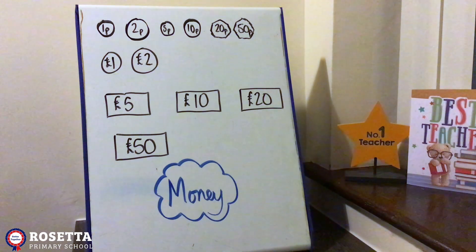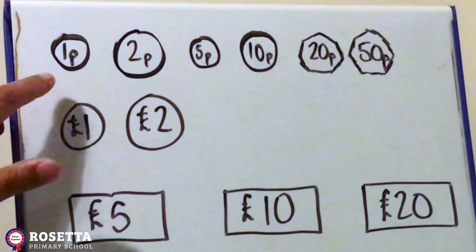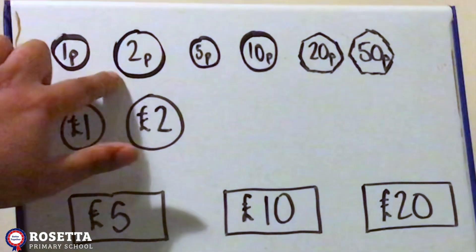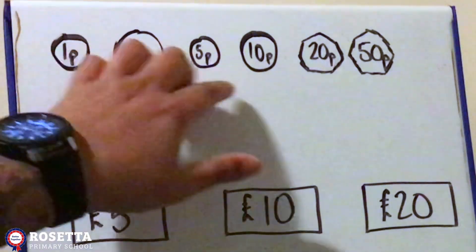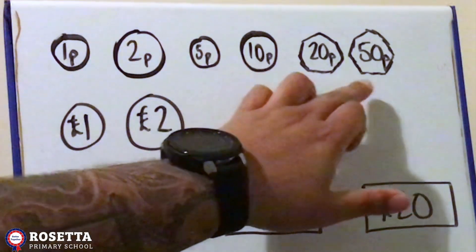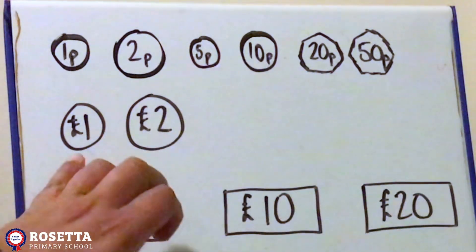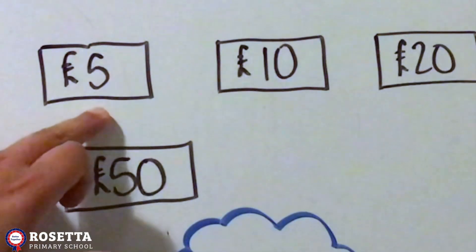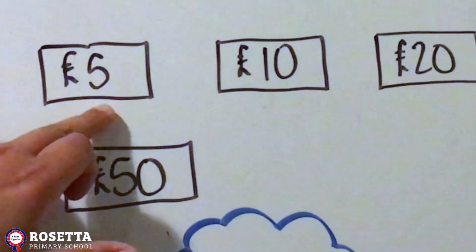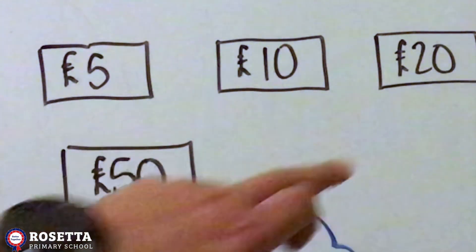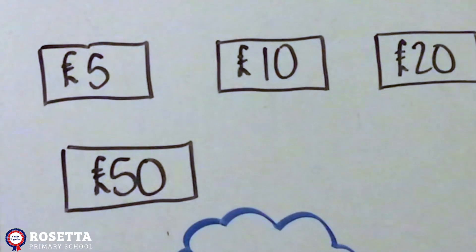So we have a one pence, two pence, five pence, ten pence, twenty pence, fifty pence, one pound, two pound, then we have a five pound, ten pound, twenty pound, fifty pound note.